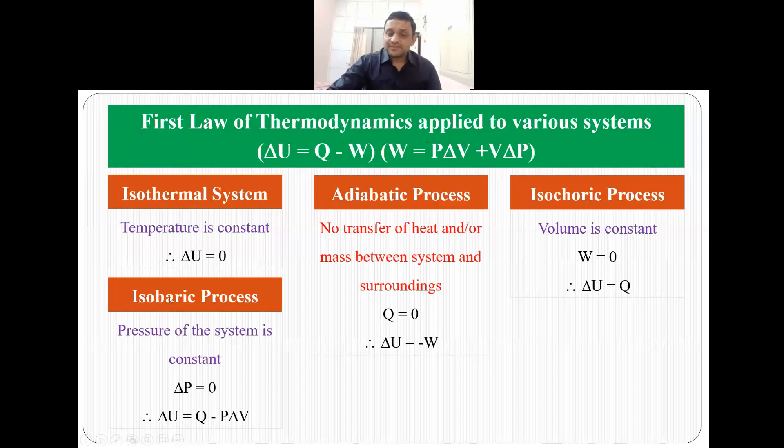In isobaric process delta P is zero since the pressure of the system is maintained and it is constant and that is why delta U is Q minus P delta V because we are eliminating this term since delta P is zero.